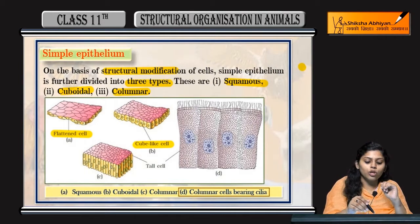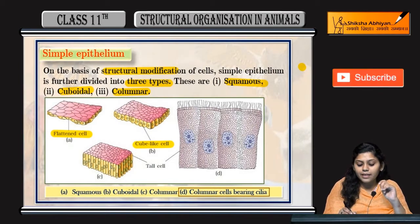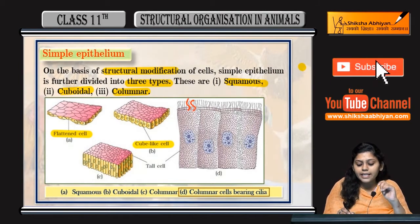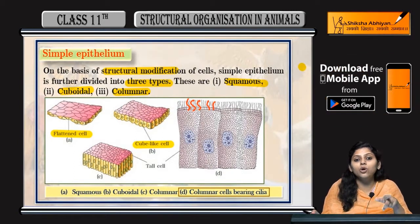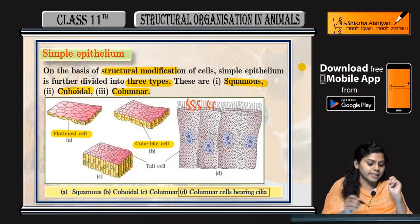If these columnar cells bear cilia on their surface, then they will be known as ciliated columnar epithelial cells.